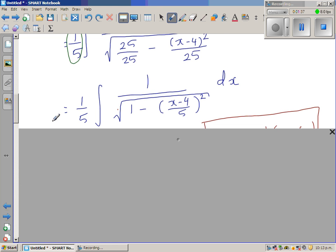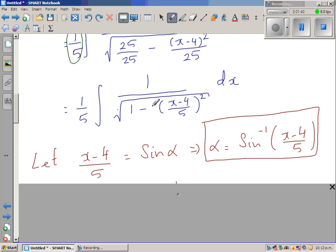Now I can do a trick substitution. Because this is similar to the identity 1 minus sin squared is cos squared. Or 1 minus cos squared is sin squared. So I'm doing a trick substitution of this.